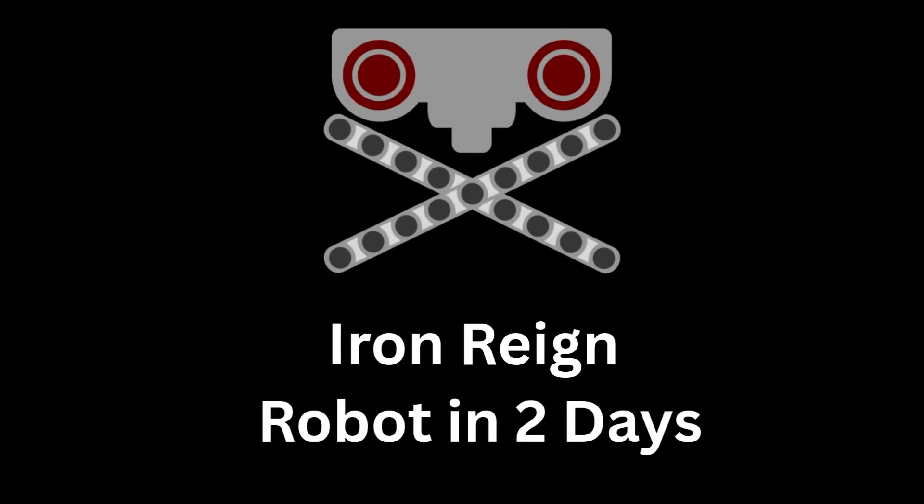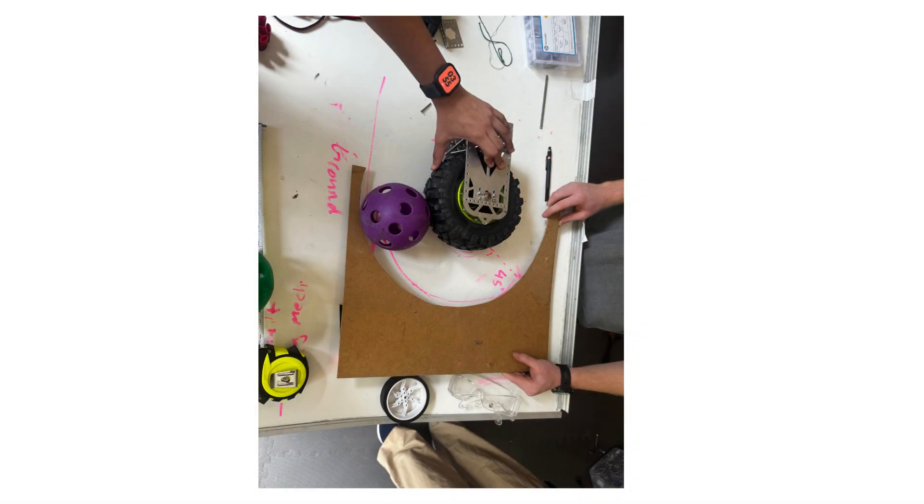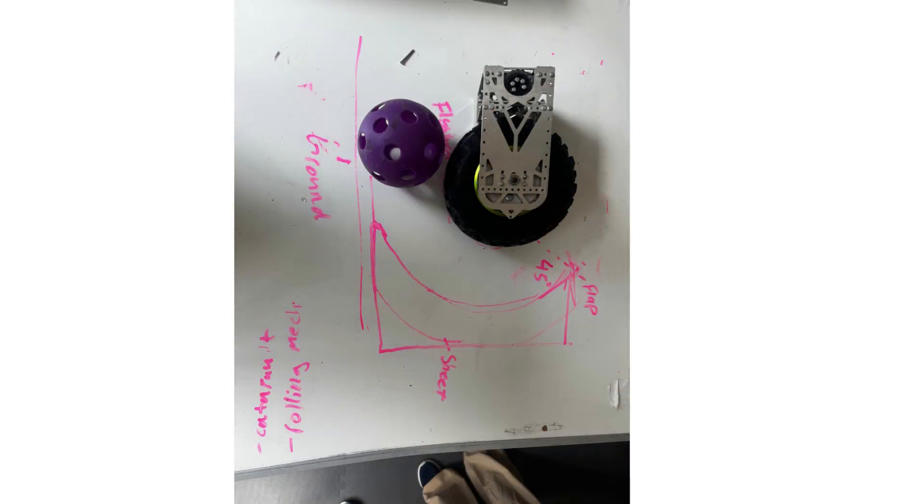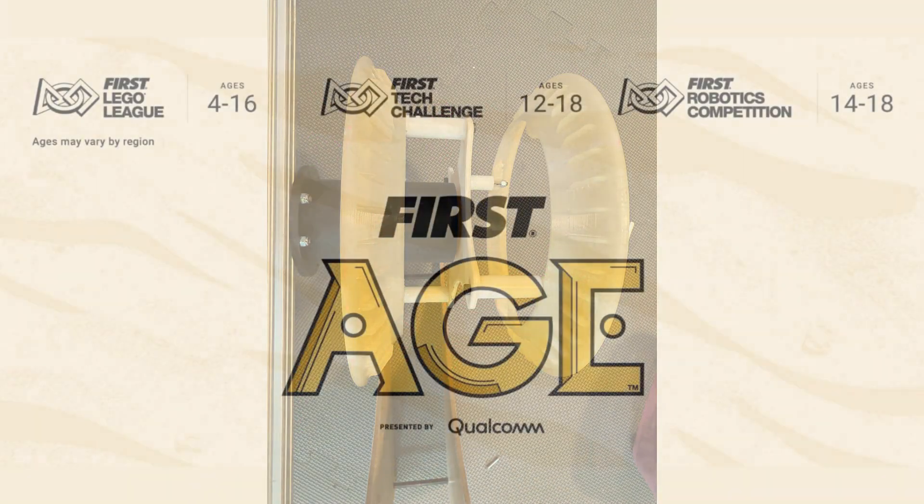Welcome to Iron Rain's Decode Robot Parts in Two Days. Robot in Two Days is how Iron Rain better understands the new season's game by starting to prototype a robot right after the game reveal. We start by sharing our first impressions and strategies.